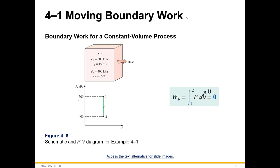Then we have the constant volume process. You'll have heat leaving and exiting, and you will stay on the same volume scale on the PV diagram — just going from state one to state two with a reduction in pressure. The derivative with respect to volume: we just put those to zero because we're not going to take a derivative of something that doesn't exist, so that's just going to be zero.